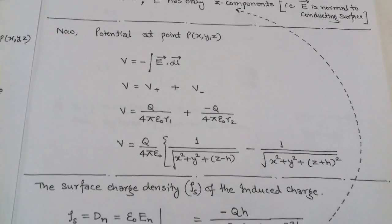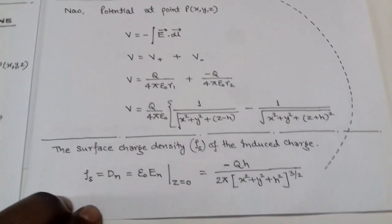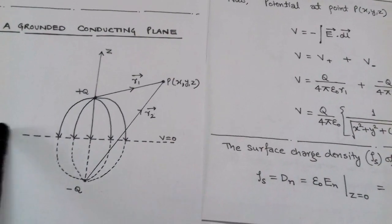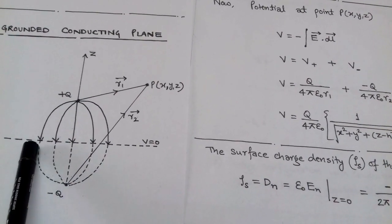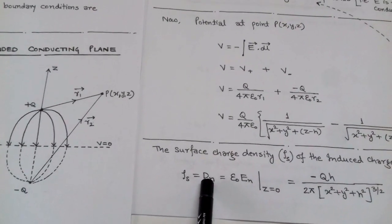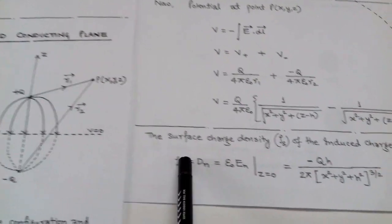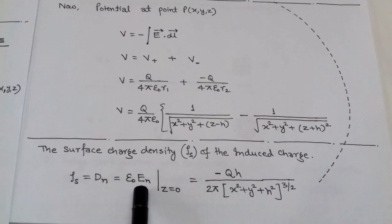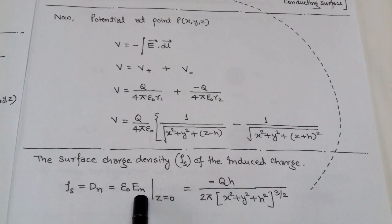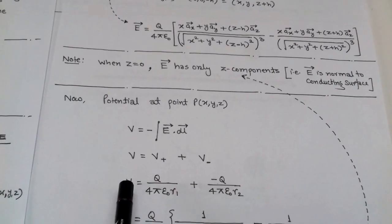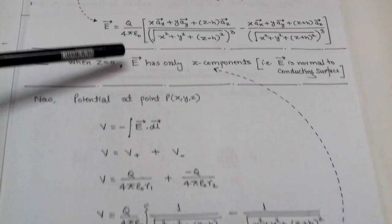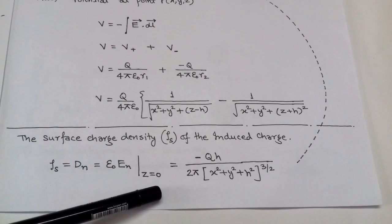We can also determine the surface charge density rho_s of the induced charge. Since the electric field has only a z-component on the equipotential surface, and the surface charge density rho_s equals the normal component, with D = ε₀E and E having only a normal component at z = 0, we apply these observations to obtain the expression for surface charge density rho_s.